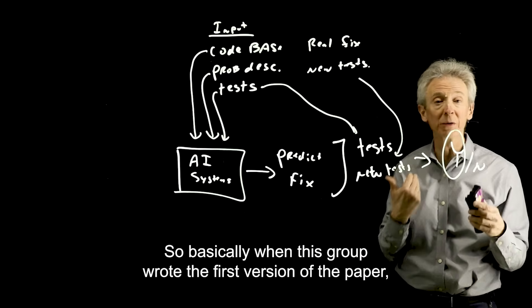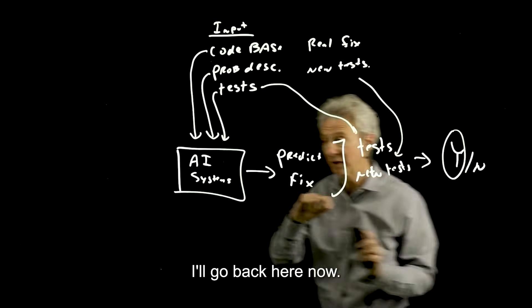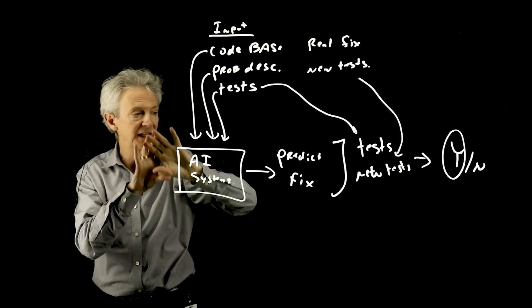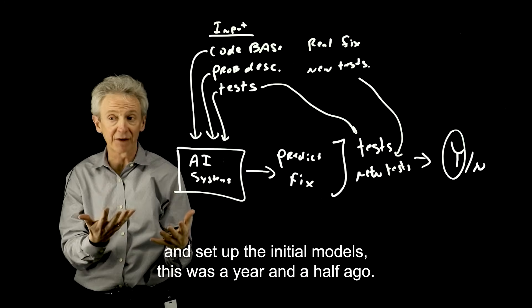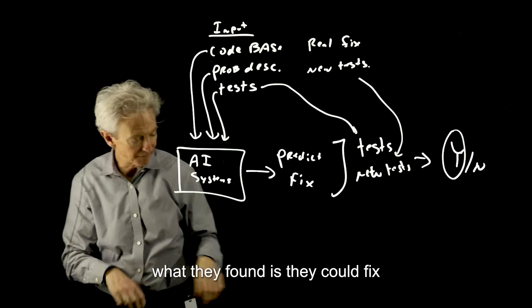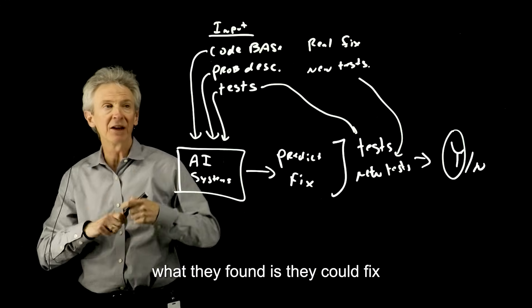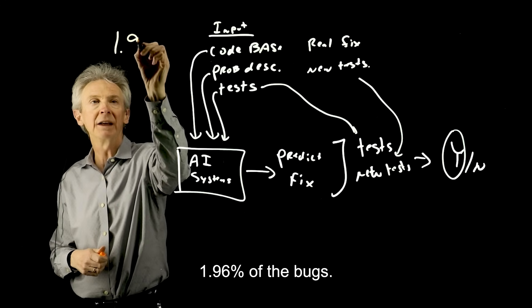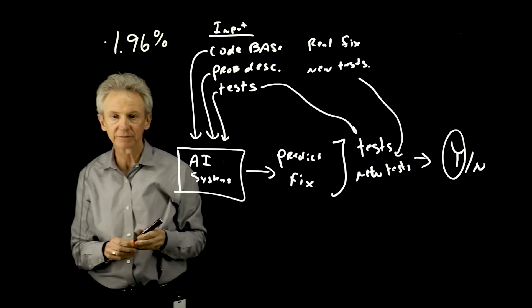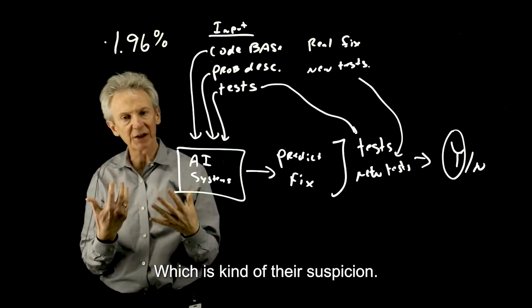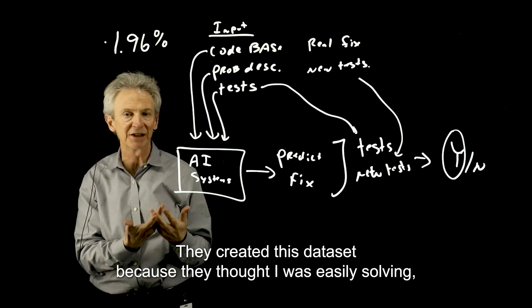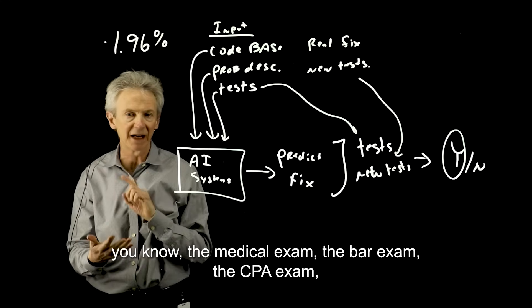So basically, when this group wrote the first version of the paper, I'll go back here now, when this group set up this data set and set up the initial models, this was a year and a half ago, so the models that existed a year and a half ago, what they found is they could fix 1.96% of the bugs, which is kind of their suspicion. They created this data set because they thought Gen AI was easily solving the medical exam, the bar exam, the CPA exam,